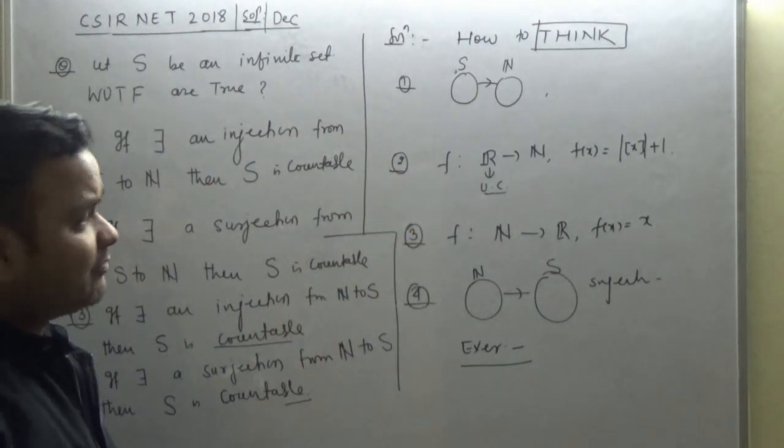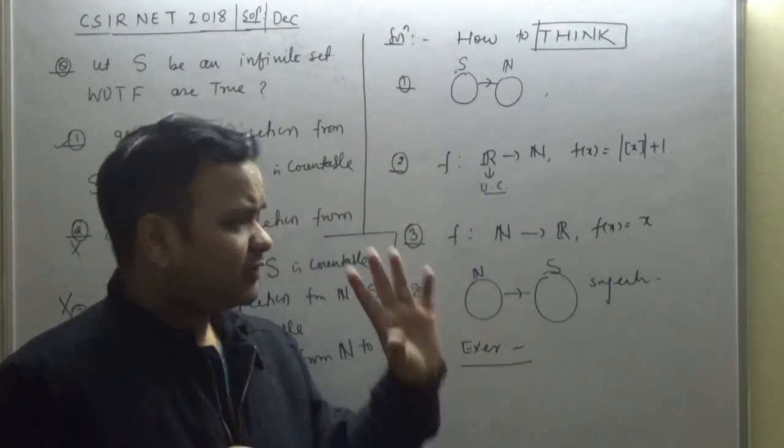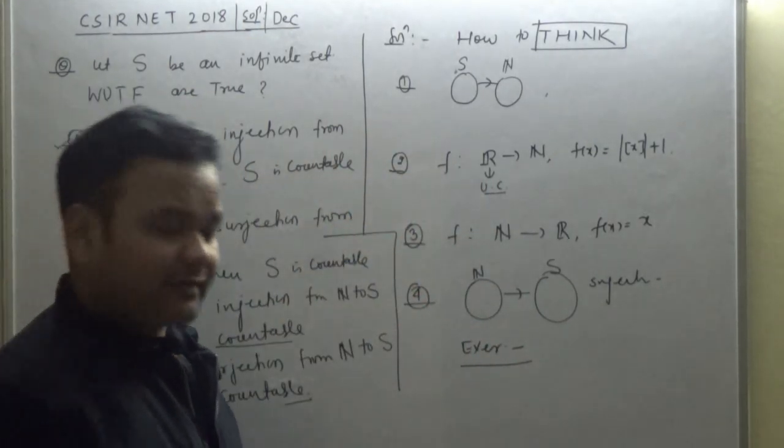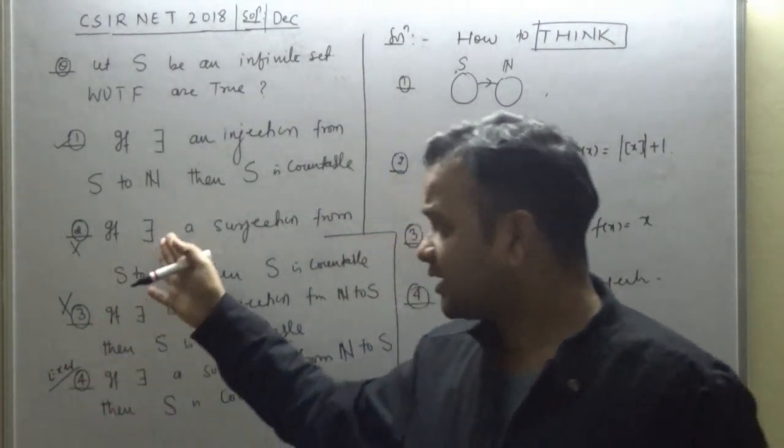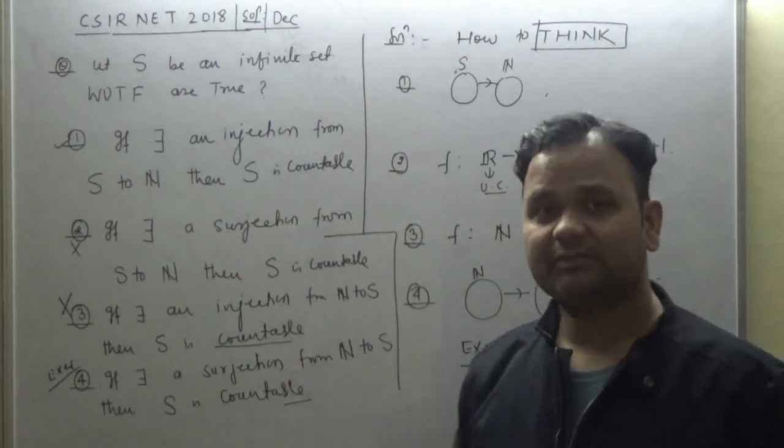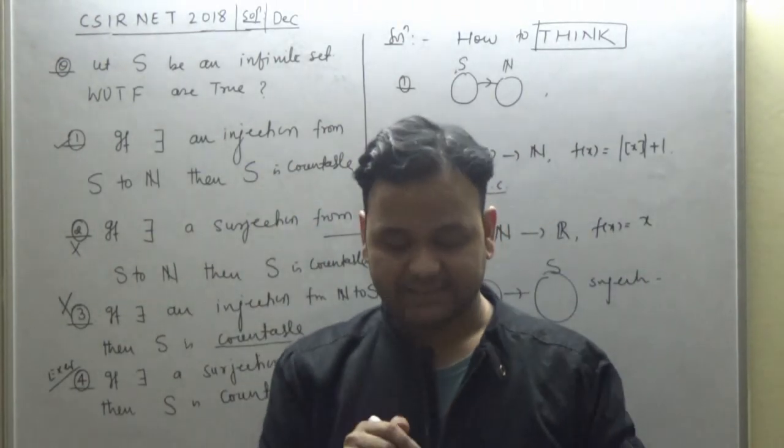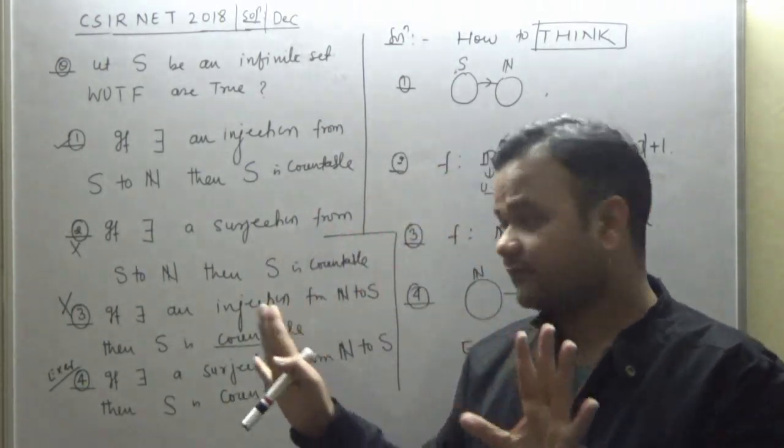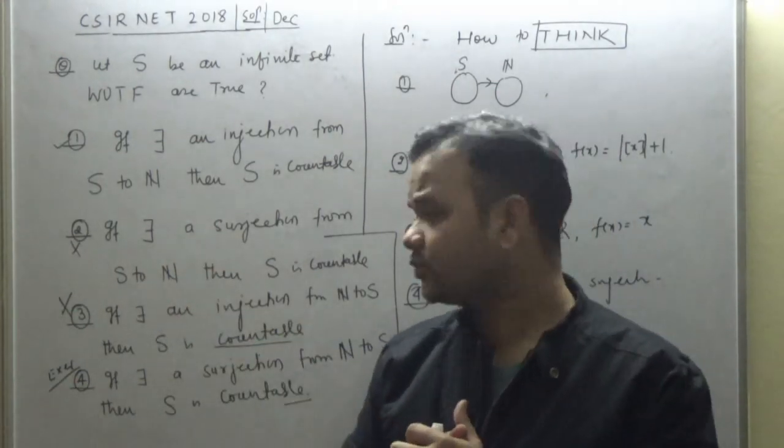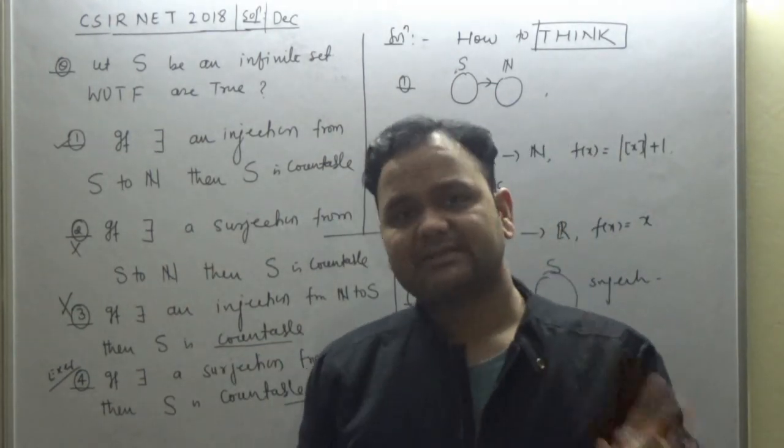So go through this, solve this. Similarly I have done this, how I have used the cardinality argument. Similar concepts you have to use here. And for options 2 and 3, I have used some simple counterexamples. This is not the only counterexample, you can look for other sets as well.